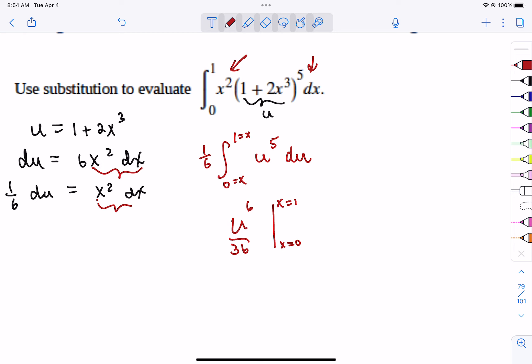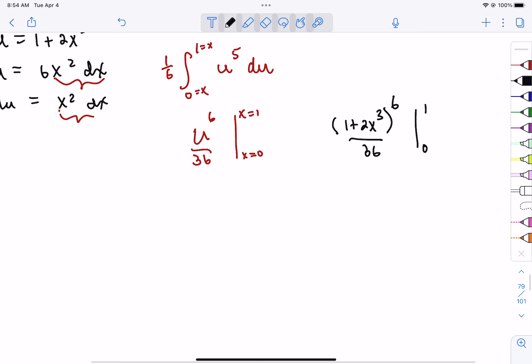So we're going to get u to the sixth, divide it by 6. We'll take the 6 that's already there and make it a 36. Power goes up by 1, divide by the new power. This is x's, so we're not ready to plug in. So if we put the x's back in, that's (1 + 2x³)⁶ over 36. And now we can put 0 and 1 in because they're x's. So if we put 1 in, we get 3⁶ over 36 minus, if we put 0 in, we get 1 over 36.